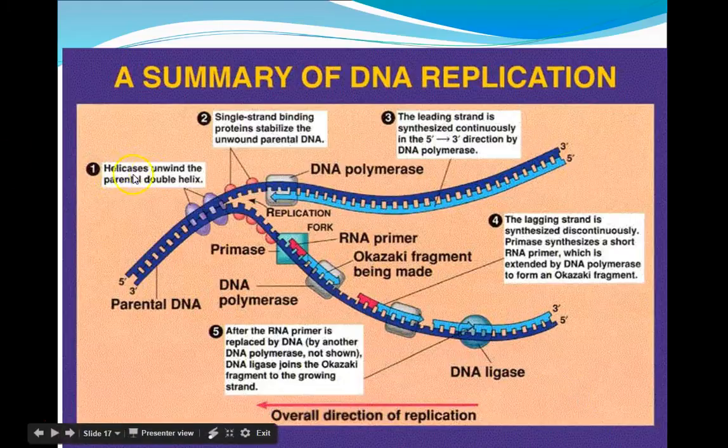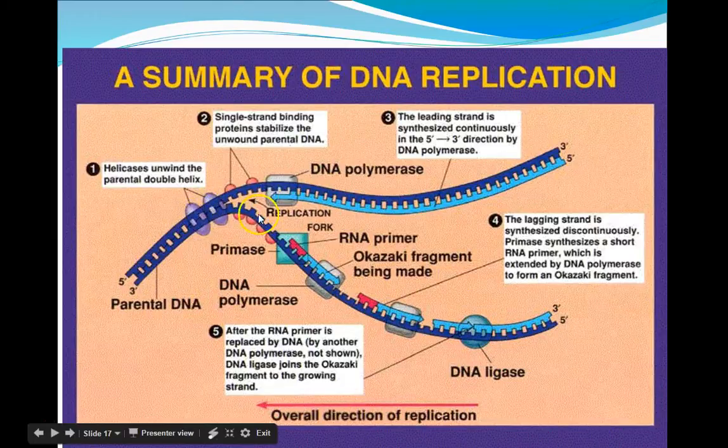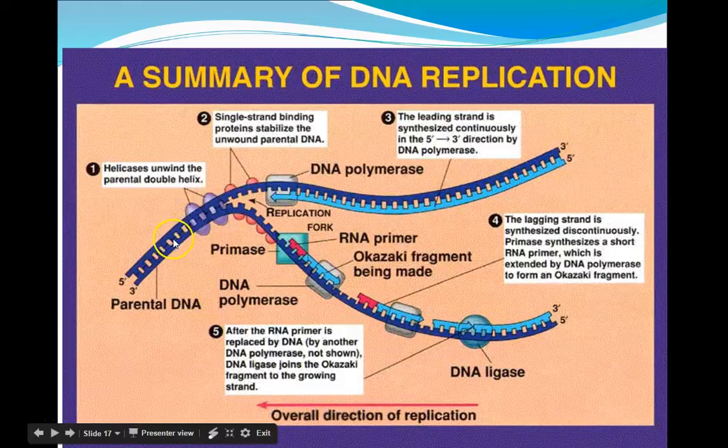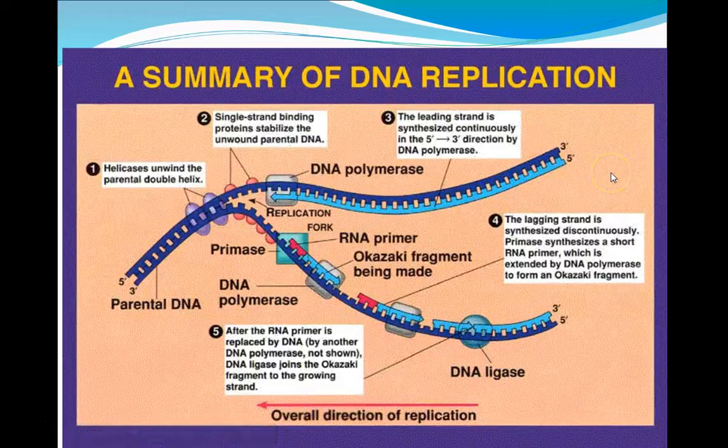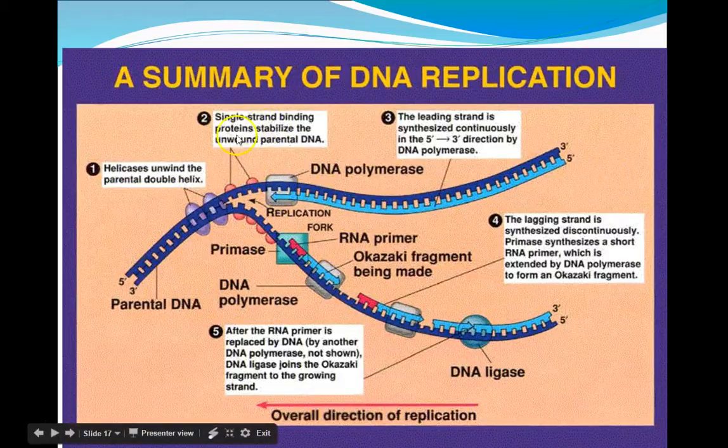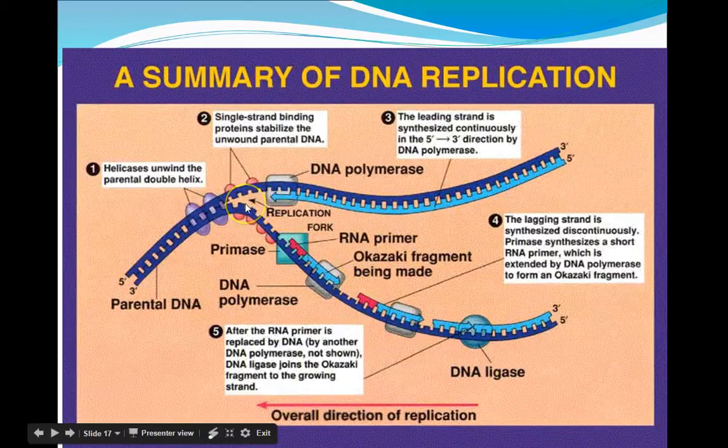So helicase is a specific enzyme that unzips the double helix. So this area right here where the helicase is unzipping that parent strand is called the replication fork. Just remember, this is happening in this direction, and there's another replication fork where DNA is replicating in another direction. So initially, these single-stranded binding proteins, or SSBs, are laid down, so the DNA can't re-anneal or reconnect back together again.